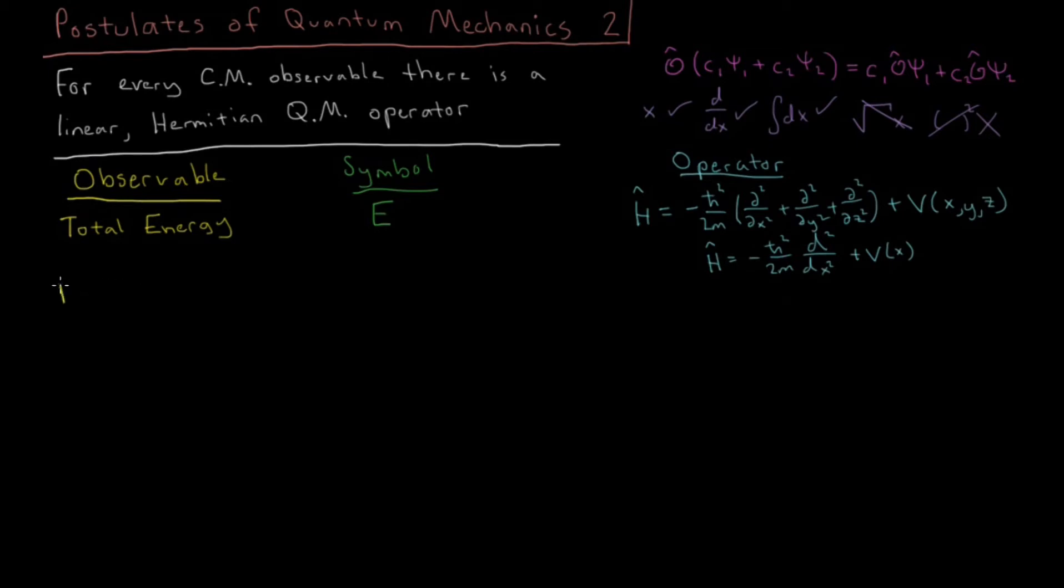Then we also have potential energy, just the potential part, not the kinetic part. And you can calculate things like average value of potential energy, and that would be the symbol V. And the operator would just be multiplying times the potential energy function, whether it be a function of x, y, and z, or whether that's just a function of x. Either way, it just depends on what the problem is.